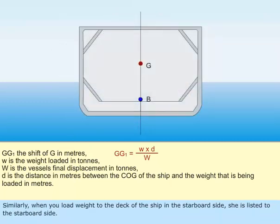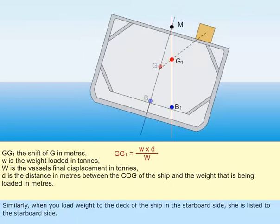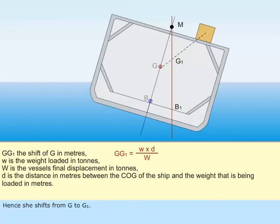Similarly, when you load weight to the deck of the ship in the starboard side, she is listed to the starboard side. Hence, G shifts from G to G1.